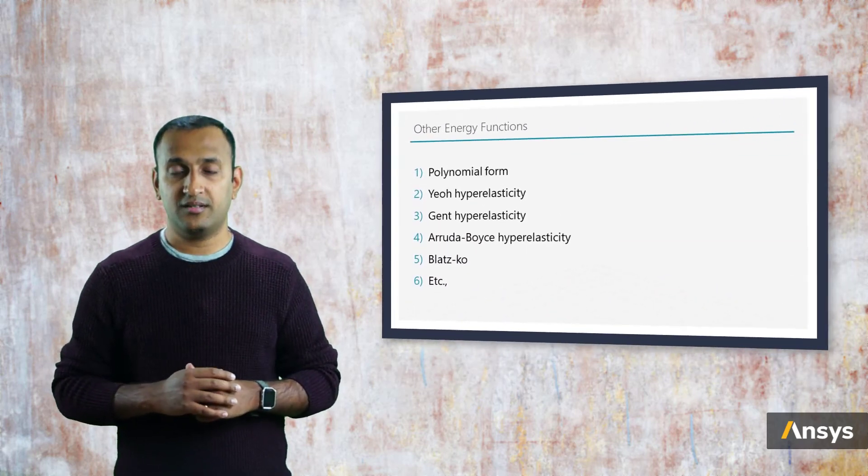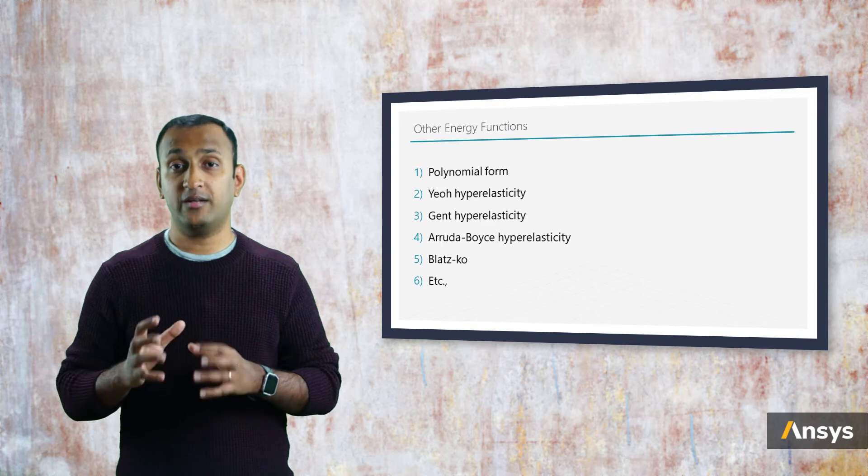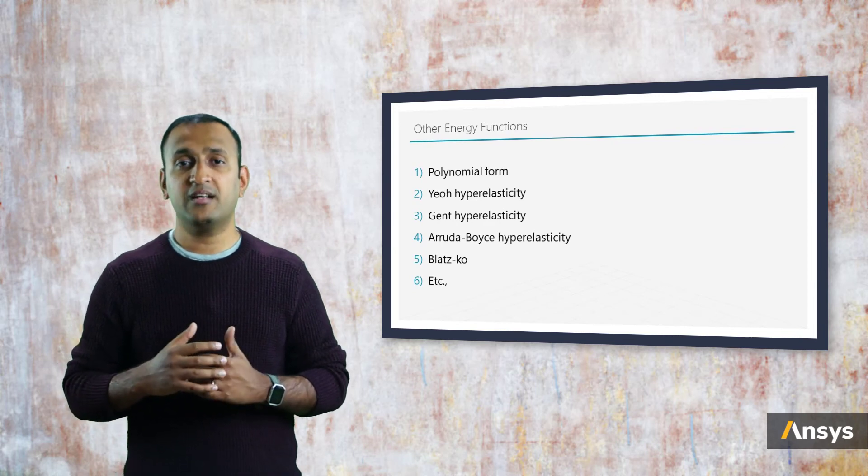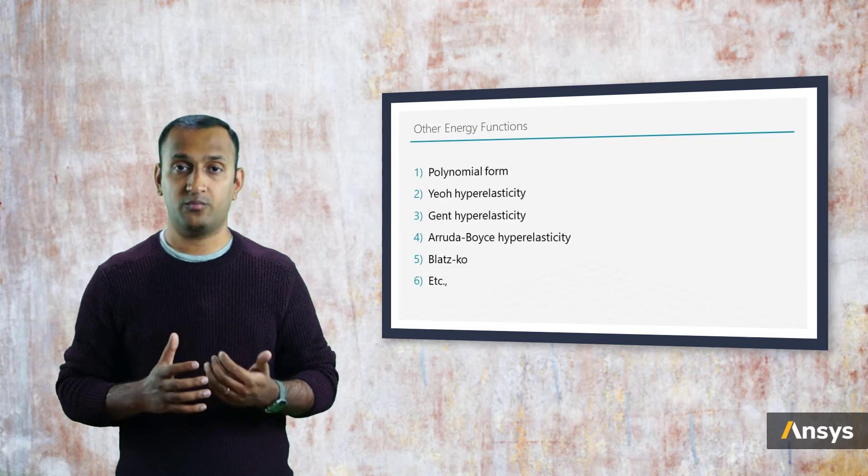This is just one example of such a model with tight coupling between the deviatoric and volumetric terms. In fact, there are several other forms that are available to model such materials, depending on how nonlinear they are or even whether they are incompressible such as rubbers or compressible such as foams.